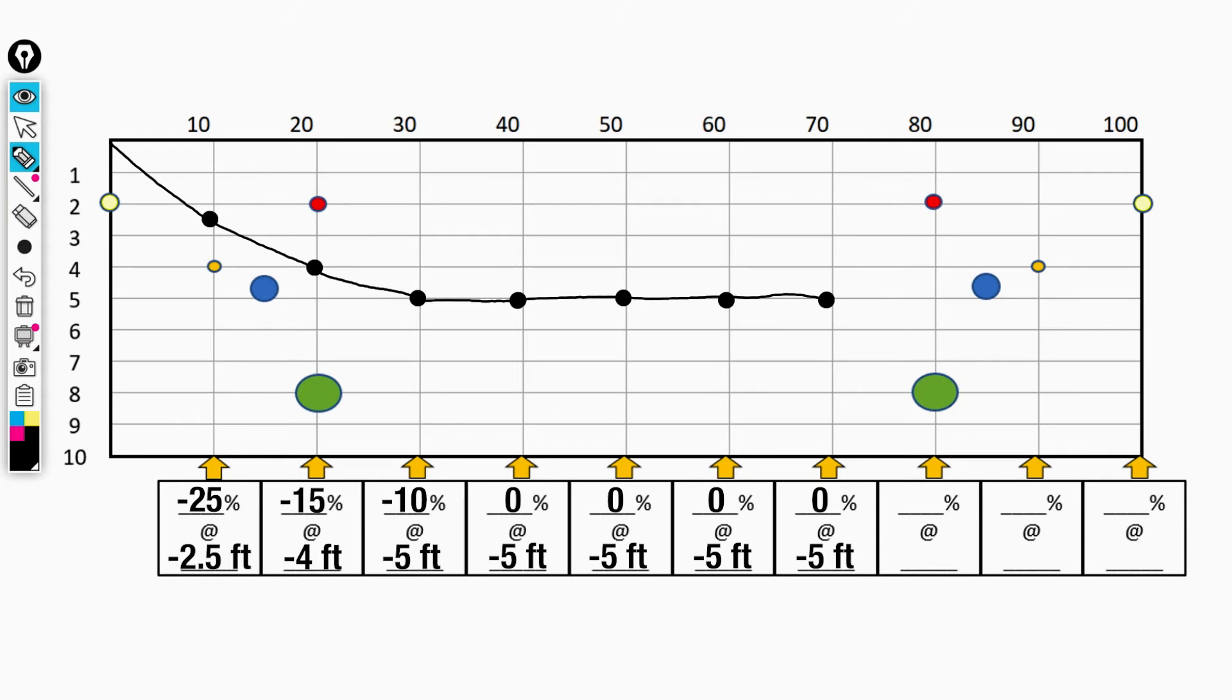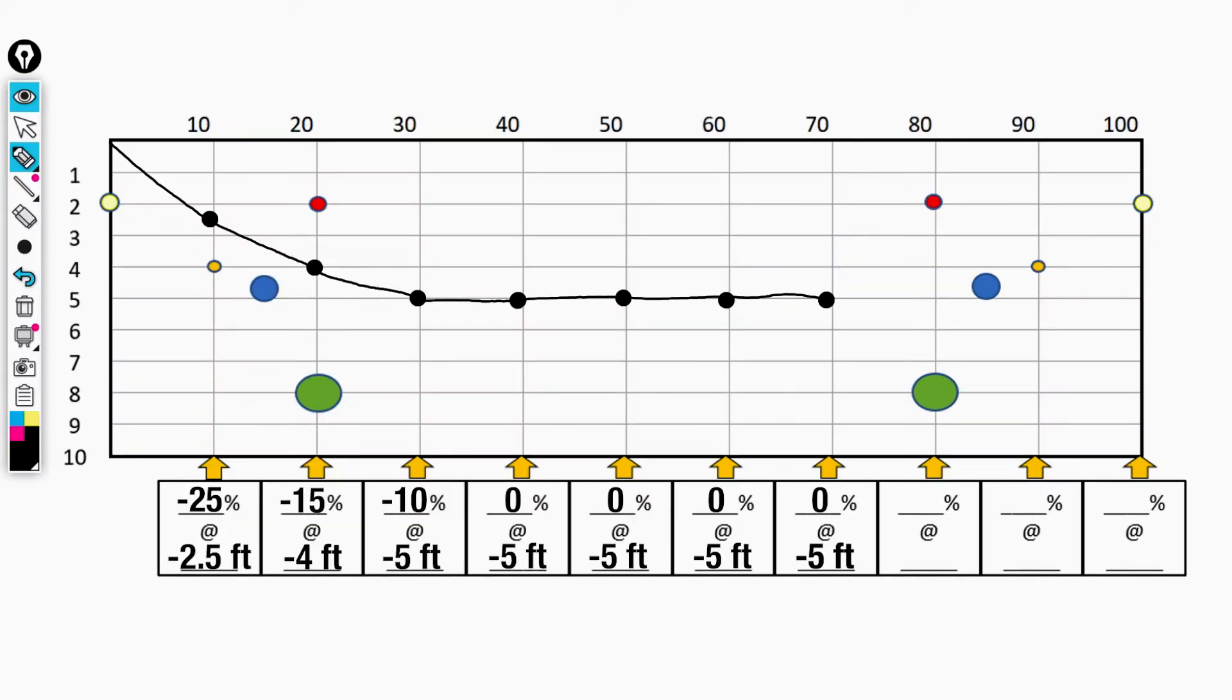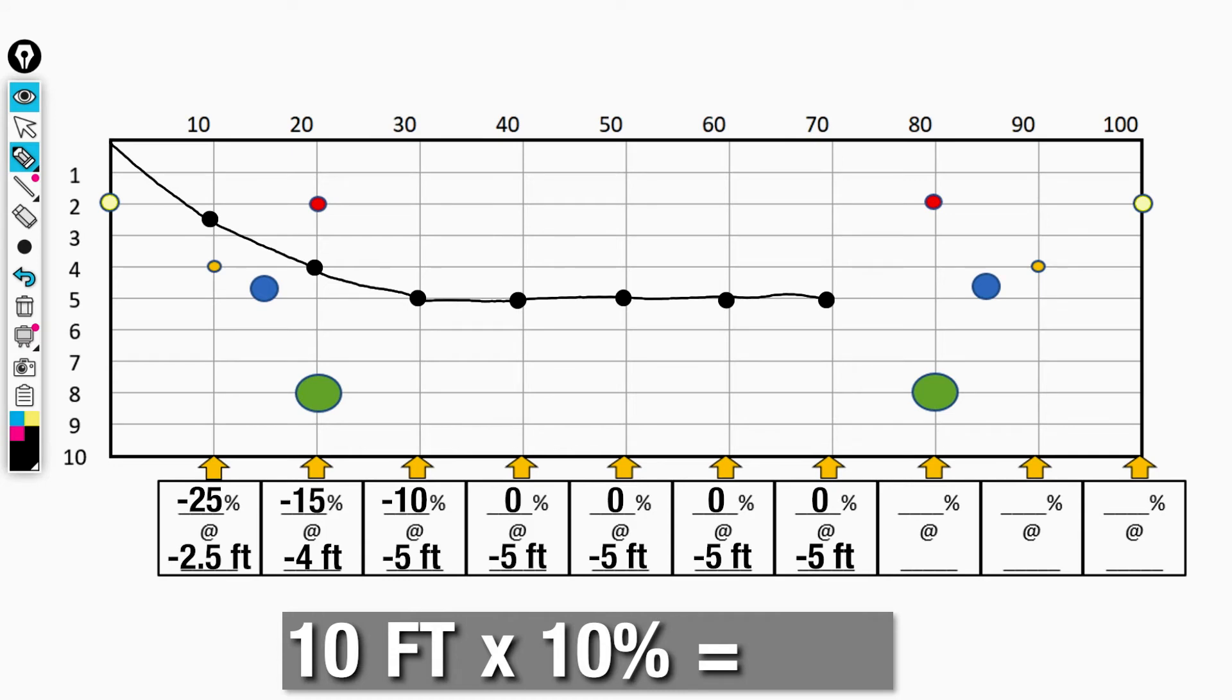Before exiting the ground, it is best practice to have your bore path entry and exit at approximately the same pitch angles. On rod eight, I need to start gradually coming up. Knowing that I want to be at four feet at the end of this rod, a depth change of one foot is needed. To achieve this, I want to end this rod at a positive 10%.